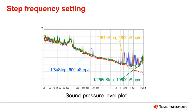If the step frequency is between 20 Hz and 20 kHz, then the step frequency and all the higher harmonics will appear in the audible range. By increasing the step frequency beyond the audible range, the audible noise is reduced, and at the same time overall smoother rotation is achieved. The sound pressure level plot shows that a higher level of micro stepping settings allows a higher step frequency and reduces the noise for the same motor speed.